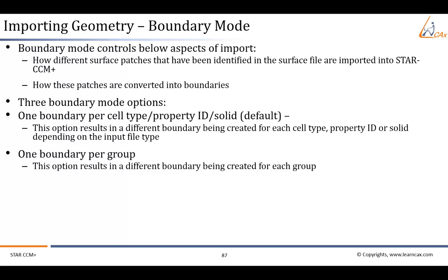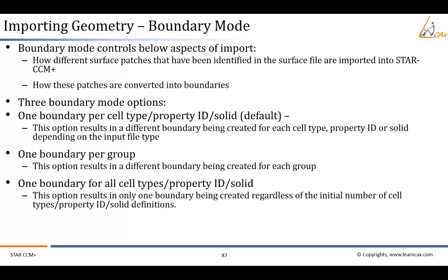The second option is 'one boundary per group.' This option results in a different boundary being created for each group. A group specifically refers to cell table grouping that was defined previously in the Pro-STAR or Pro-SURF pre-processing software from CD-adapco. The third option is 'one boundary for all cell types, property ID, or solid.' This option results in only one boundary being created regardless of the initial number of cell type, property ID, or solid definitions.